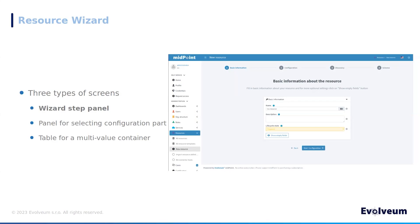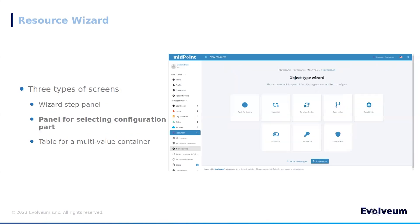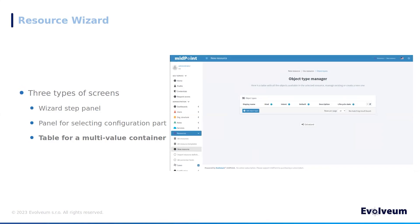The resource wizard contains three basic types of panels. The first is the wizard step panel, which represents one step in the sequence of the configuration part. The second type of panel shows configuration options — we can select one and proceed with the configuration, then return to the panel with configuration options to continue with the next section. The last type of panel represents a table that displays multiple values for a specific configuration property, such as object type definitions.